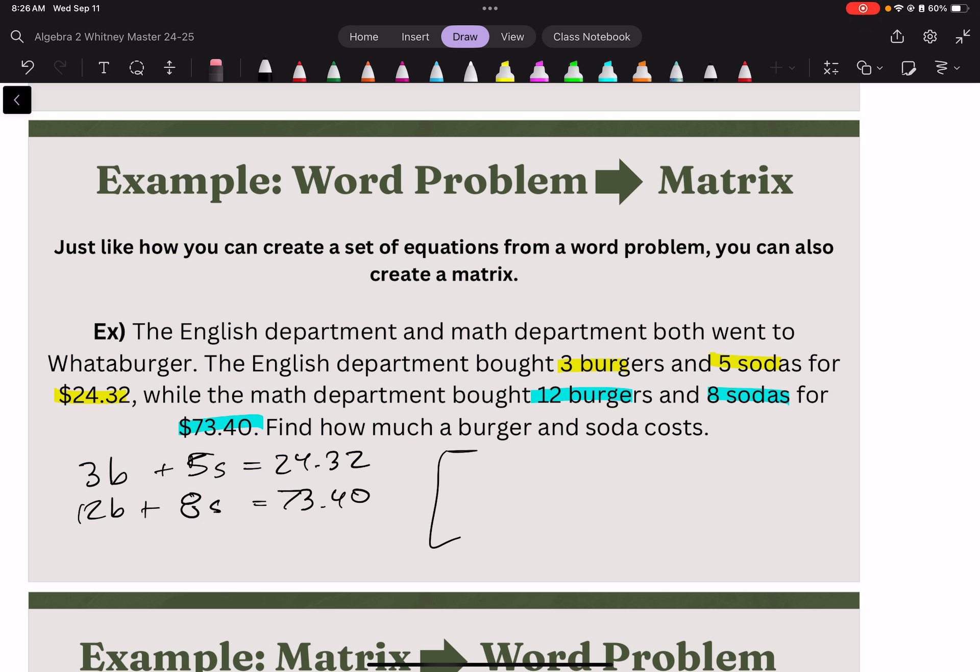We can then turn that into a matrix because it's already in standard form. 3, 5, 24.32. 12, 8, 73.40.